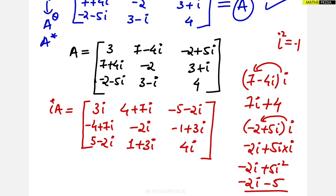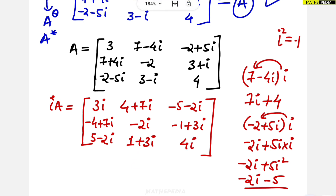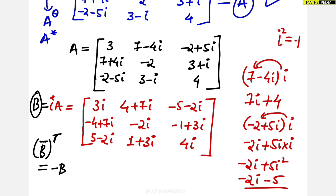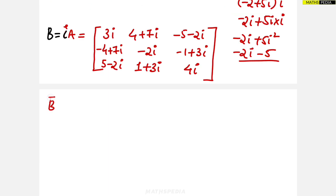We have completed the multiplication to get i·A. We represent this matrix as B. Now we have to prove that the conjugate transpose of B equals −B. Let us find B conjugate first — wherever there is an imaginary part, change the sign. So 3i becomes −3i, and so on for all elements.